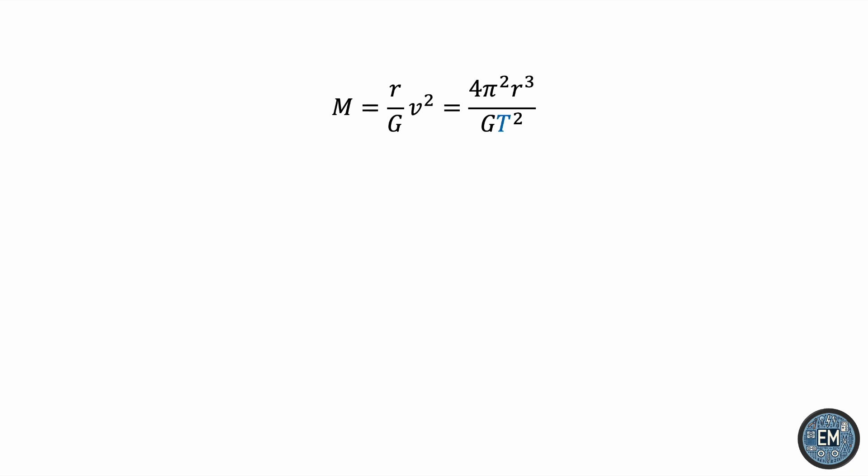Now the question is, what is this T, this period of revolution? We know that it takes Earth one year to complete one full revolution around the Sun, so that's 365 days. There are 24 hours every day, 60 minutes every hour, and 60 seconds every minute, so we get a total of 3.1536×10⁷ seconds.